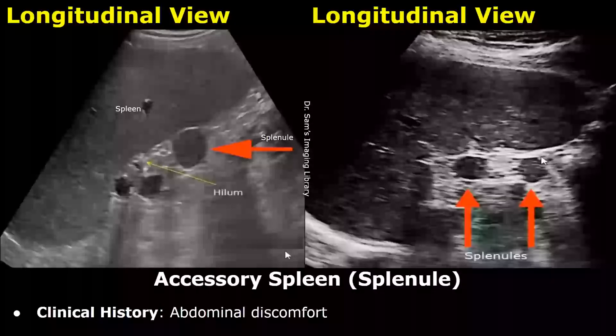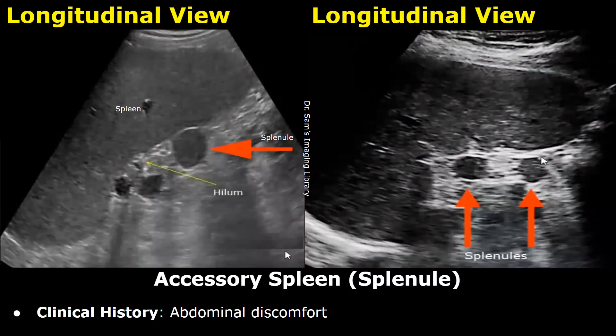Hello everyone, this is Dr. Sam and this video is about spleen ultrasound reporting. We will see how to write ultrasound reports for the spleen. We will look at the clinical history, findings and impression. This is not a complete abdominal ultrasound report. The first case is of accessory spleen or splenule.